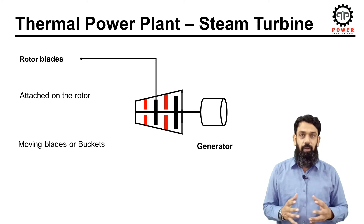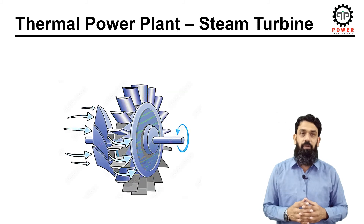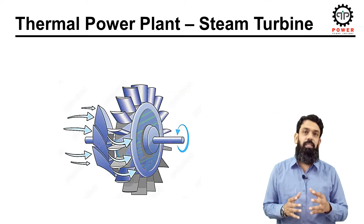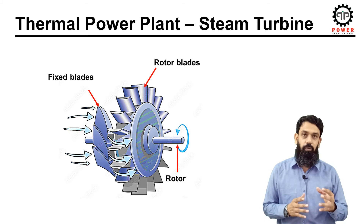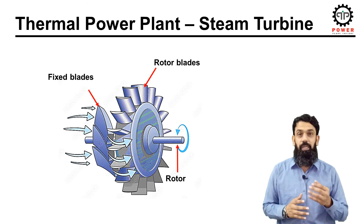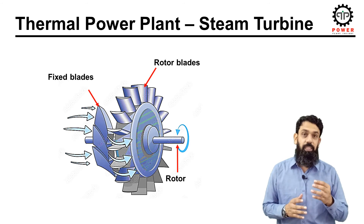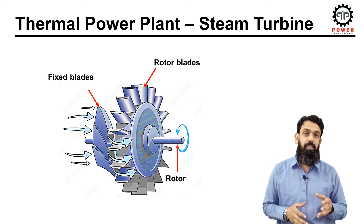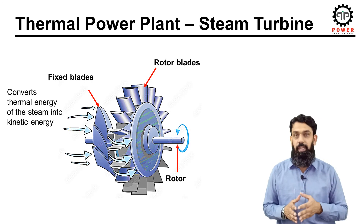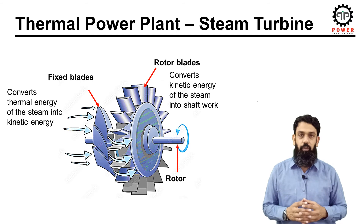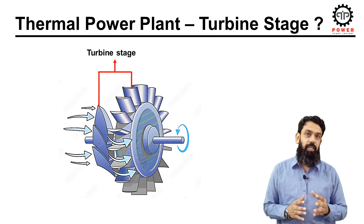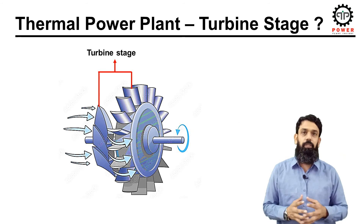Now let's discuss how the thermal energy of steam is converted into mechanical energy. These are fixed blades attached to the casing, and this is the rotor with rotor blades attached onto it. When steam leaves the fixed blades acting as nozzles, the kinetic energy or velocity of the steam increases and the steam changes direction towards the face of the rotor blades — this converts thermal energy into kinetic energy. The rotor blades then convert this kinetic energy into shaft work, resulting in rotational movement of the rotor, which is coupled with the generator to generate electricity. A set of fixed and rotor blades is called a turbine stage, and turbines usually have multiple stages depending on system requirements.